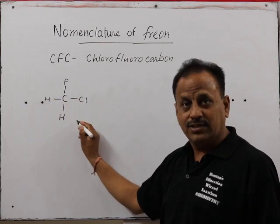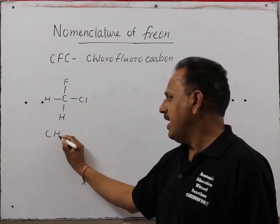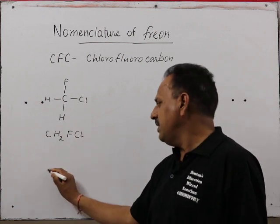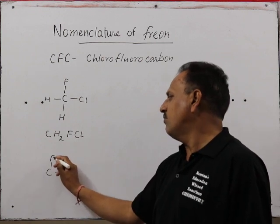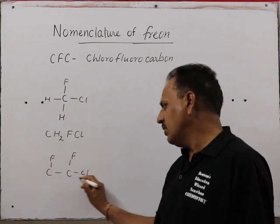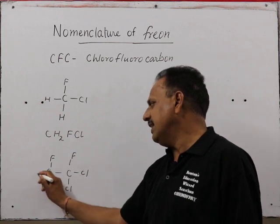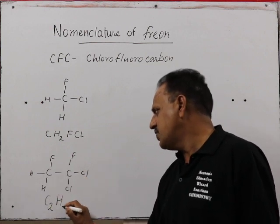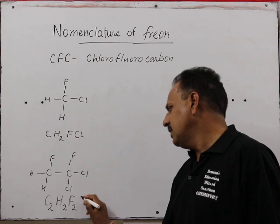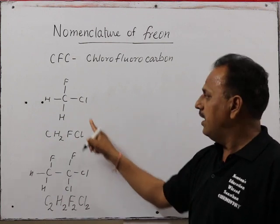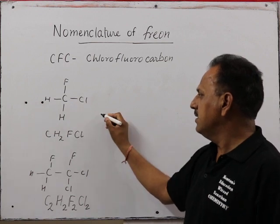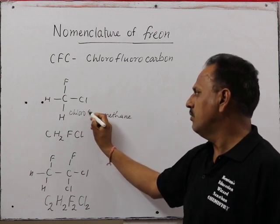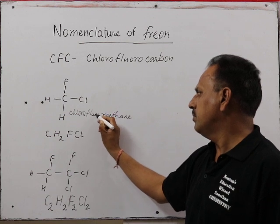The remaining two valencies may be satisfied by hydrogen. The formula contains C, H2, F, and Cl. There may be more than one carbon, more than one fluorine, more than one chlorine, and more than one hydrogen. For example, the molecular formula C2, H2, F2, and Cl2. According to IUPAC it is chlorofluoromethane.